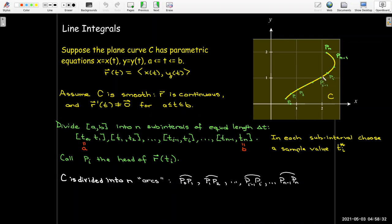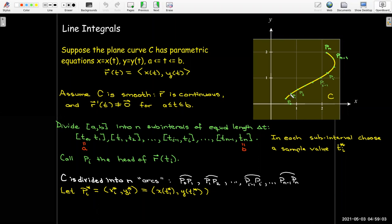Now we have broken up our curve into n sub curves, or little arcs here, from p0 to p1, p1 to p2, and so on. If we look at the image of our sample value, that will give us a sample point on each one of these little sub curves. Just because the parameter intervals have the same length delta t, that doesn't mean that each arc has the same length. Delta s_i is going to be the length of the curve from p sub i minus 1 to p sub i.